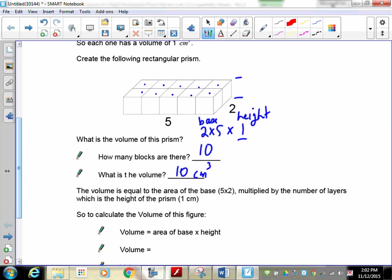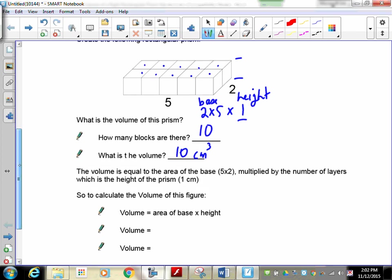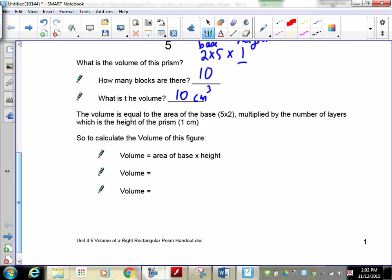To calculate the volume of this particular one, we're going to find the area of the base. So the area of the base is 5x2 or 2x5, and we have a height which is one block tall. So 5x2 is 10 times 1, means my volume is 10 centimeter cubes.